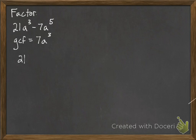So we can say, what is 21a³ divided by that 7a³? Well, 21 divided by 7 is 3. Any a cubes are all completely gone.